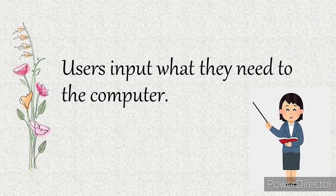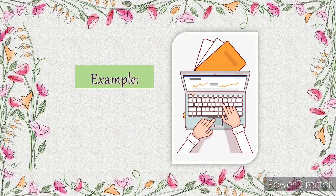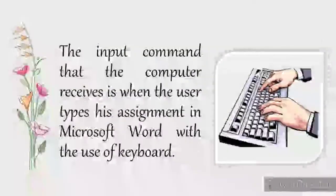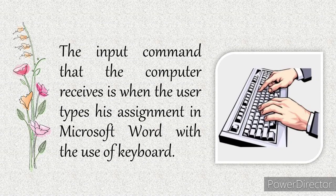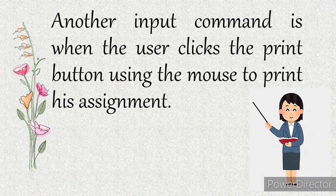Users input what they need to the computer. For example, you need to pass a computer-encoded homework to your teacher. You will type your assignment in Microsoft Word, then have it printed afterwards. The input command that the computer receives is when the user types his assignment in Microsoft Word with the use of a keyboard. Another input command is when the user clicks the print button using the mouse to print his assignment.